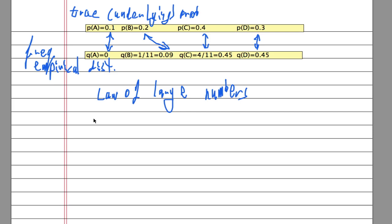Which basically says that as n goes to infinity, so as we collect more and more samples from our random process, then Q actually converges to P.